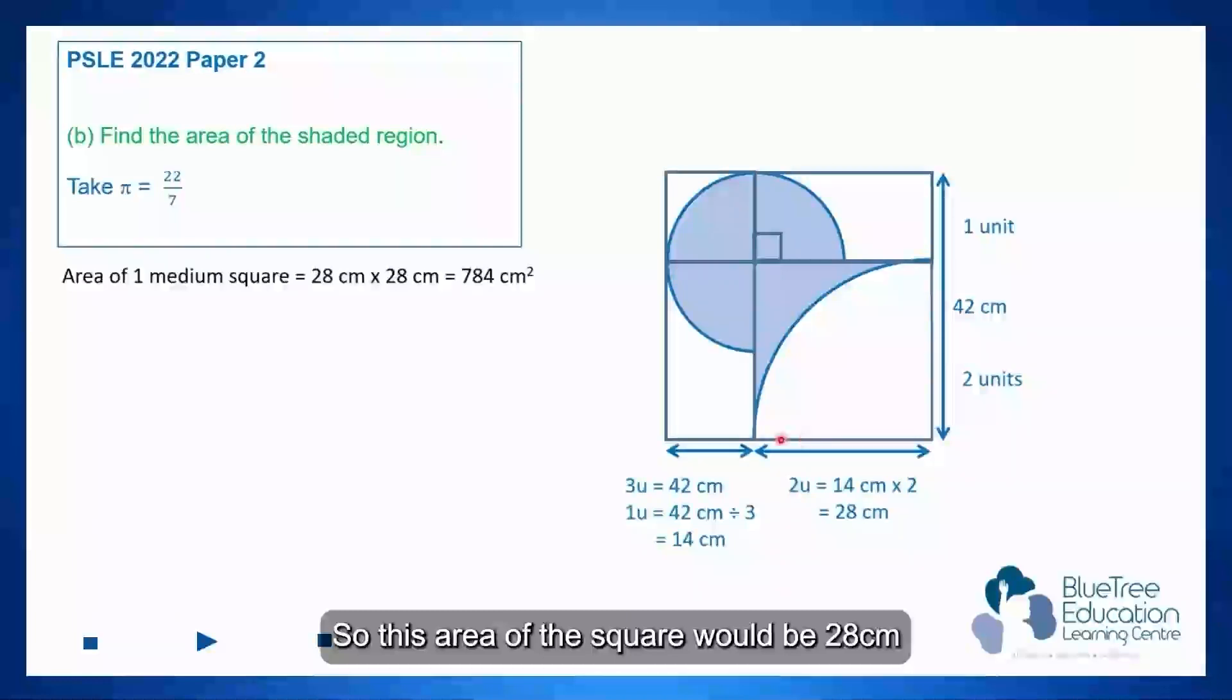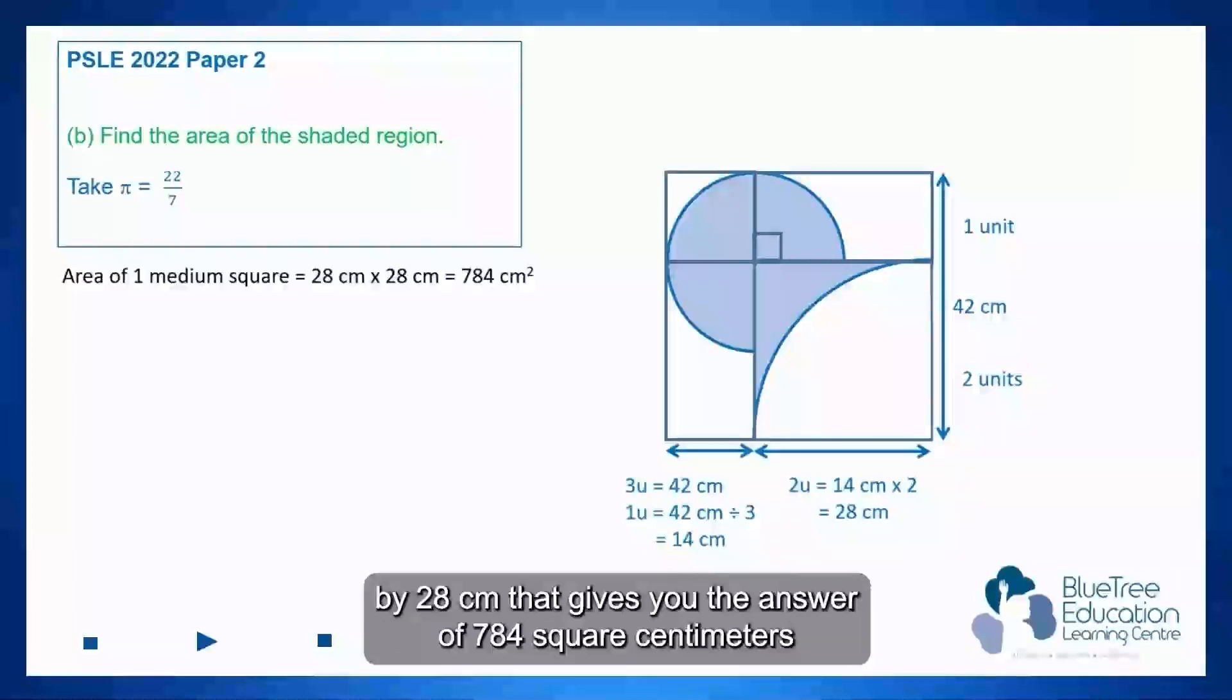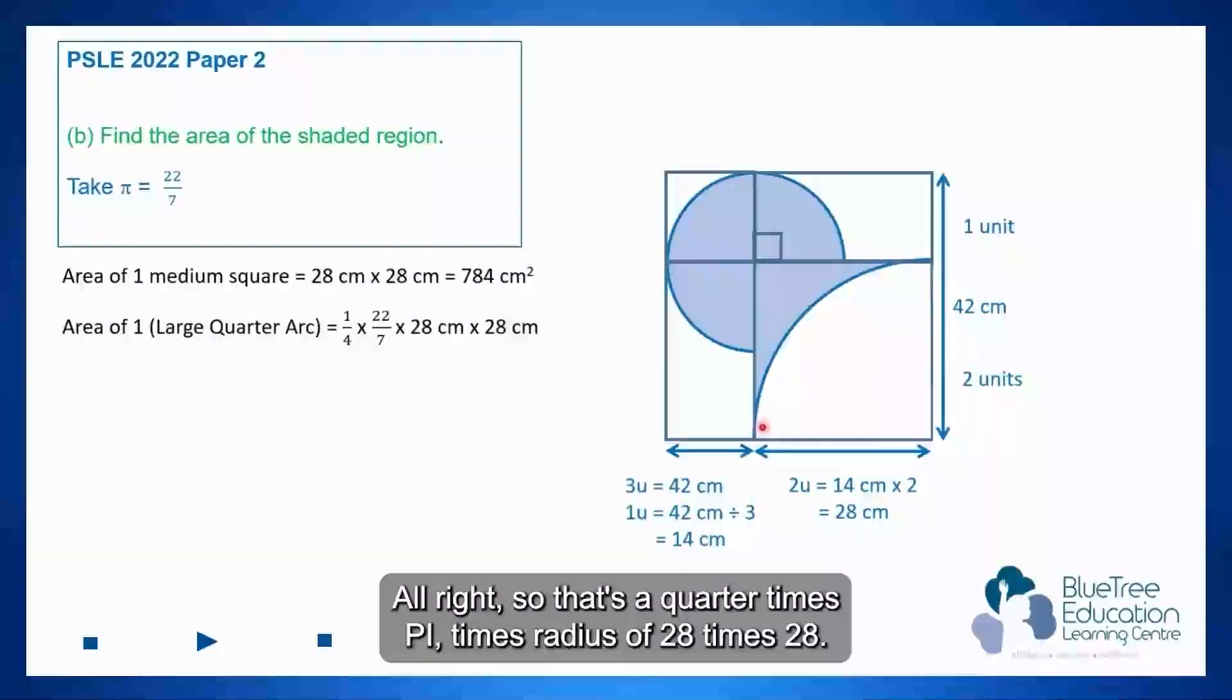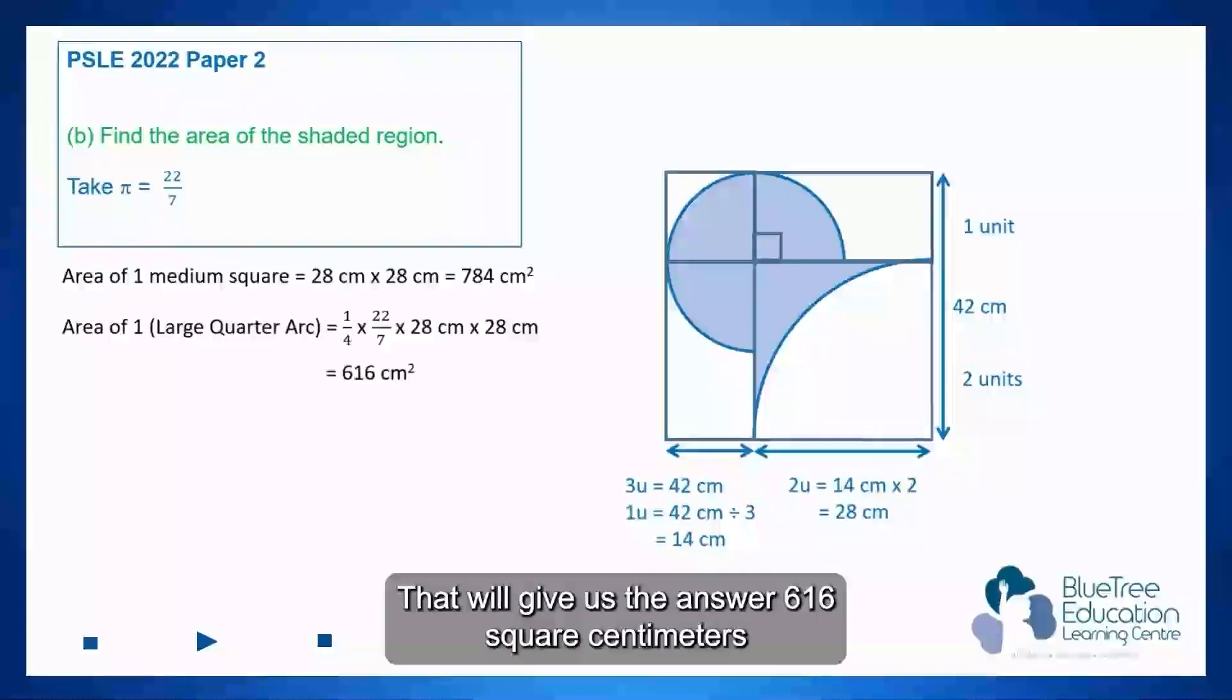So this area of the square would be 28 cm by 28 cm that gives you an answer of 784 square centimeters. And I'm interested to find the quarter arc over here. So that's a quarter times π times radius of 28 times 28. That will give us the answer 616 square centimeters.